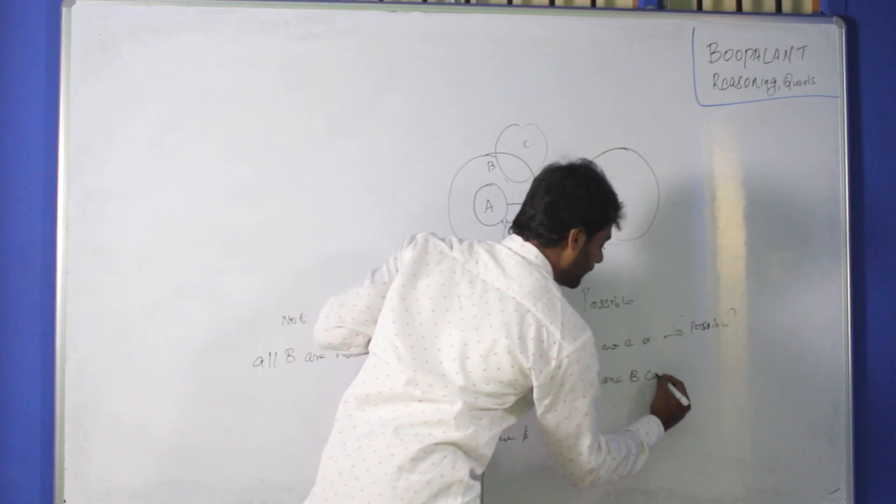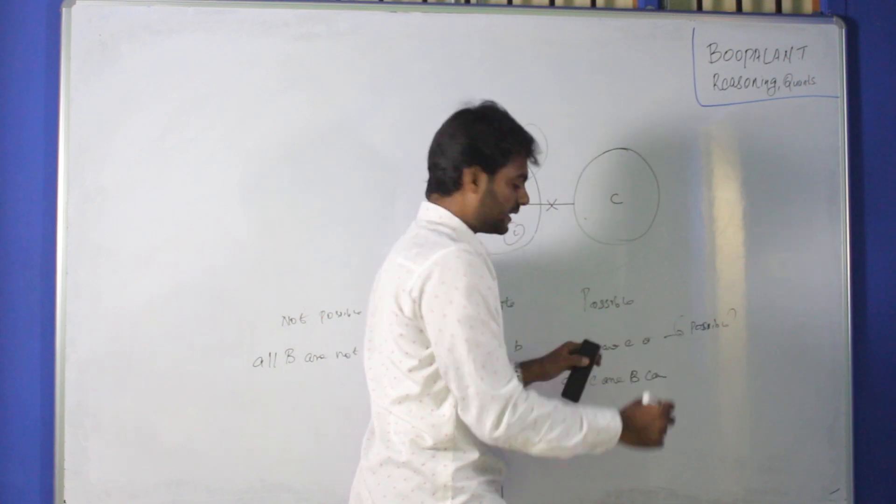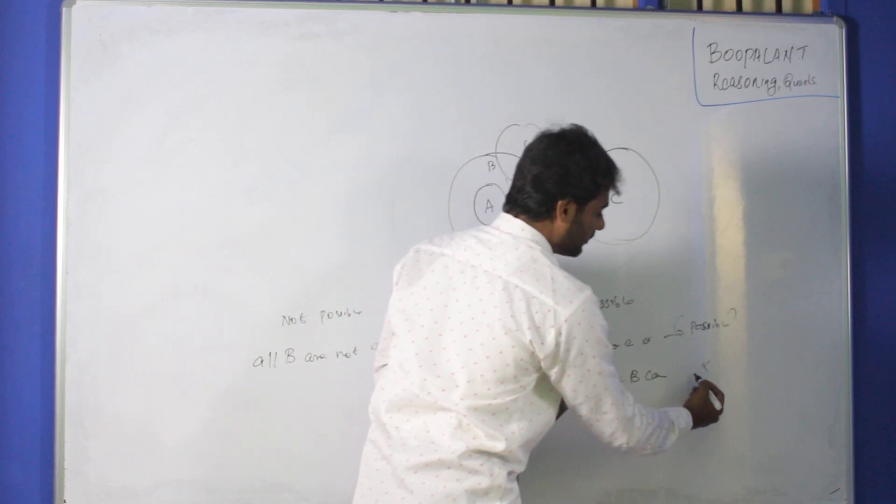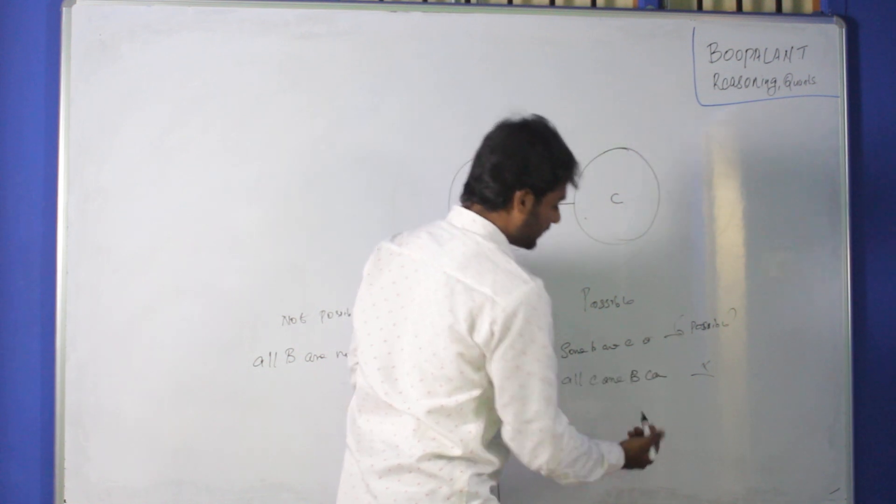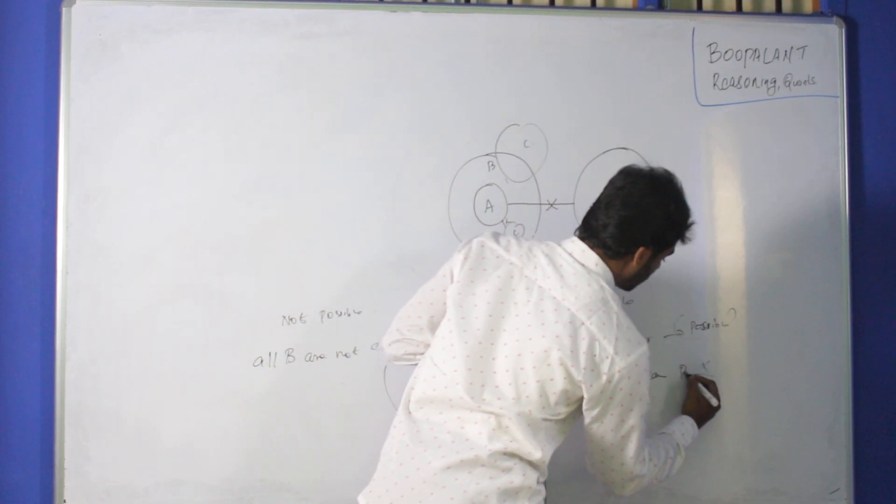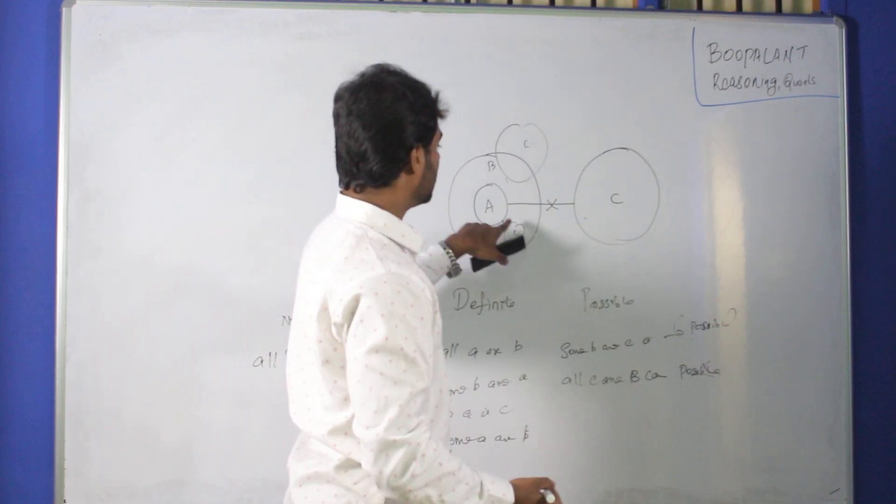If it can be possible, you can use the option. If it can be possible, you can use the statement. All C can be B is possible.